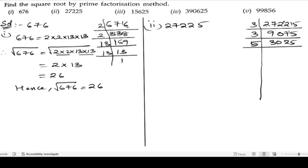Next we check the result. 3 plus 2 is 5, 5 plus 5 is 10 — this does not come in the 3 table, so we have to take the 5 table.